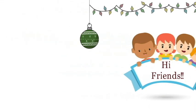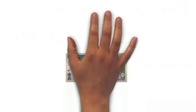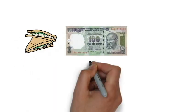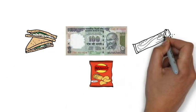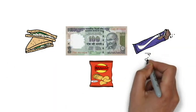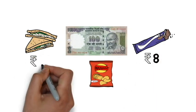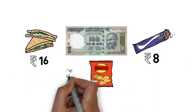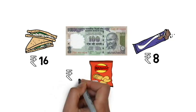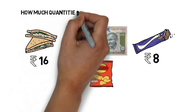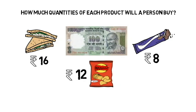Hi friends! Say I give your friend Rs.100 and ask him to buy 3 commodities: sandwiches, chips and a few chocolates. The prices are: chocolate for Rs.8, sandwich for Rs.16 and chips for Rs.12. How much quantity of each product will your friend buy?